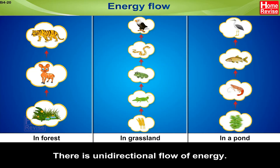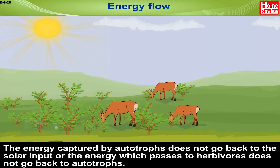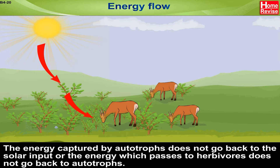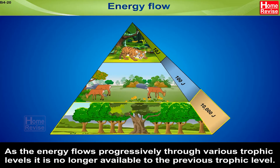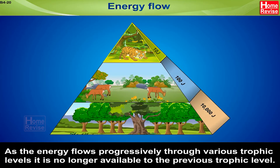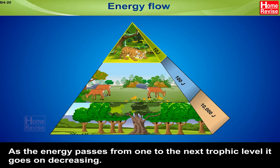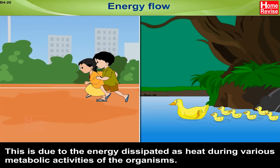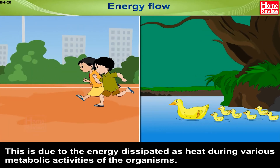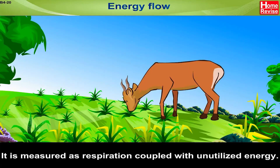Energy Flow. There is unidirectional flow of energy. The energy captured by autotrophs does not go back to the solar input, and the energy which passes to herbivores does not go back to autotrophs. As the energy flows progressively through various trophic levels, it is no longer available to the previous trophic level. As energy passes from one to the next trophic level, it goes on decreasing. This is due to the energy dissipated as heat during various metabolic activities of the organisms. It is measured as respiration coupled with unutilized energy.